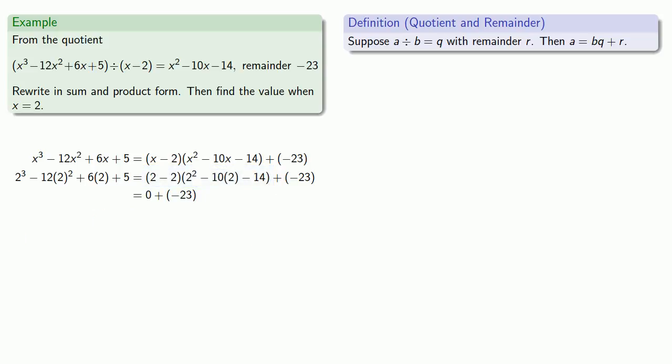And so my right-hand side will be 0 plus negative 23, or just negative 23. And since equals means replaceable, it means that if I went through the trouble of calculating the left-hand side, I would end up with negative 23. But I was able to find it much more easily. And this suggests what's known as the remainder theorem.